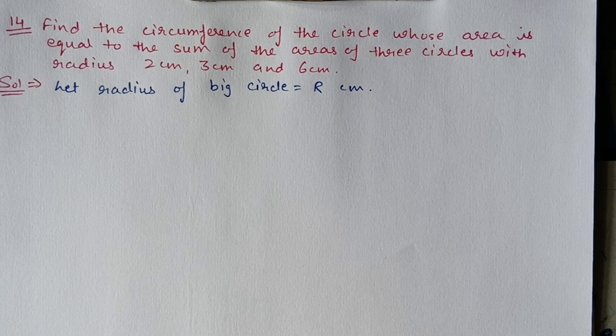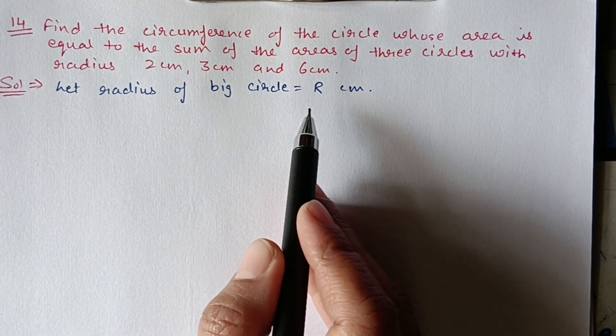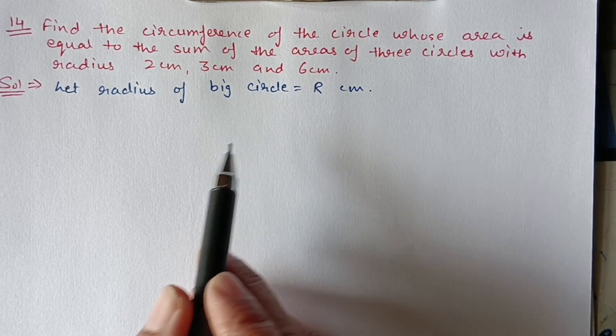Next, we have Question 14. Find the circumference of the circle whose area is equal to the sum of the areas of 3 circles with radius 2 centimeter, 3 centimeter and 6 centimeter. Let the radius of the big circle be r centimeter.